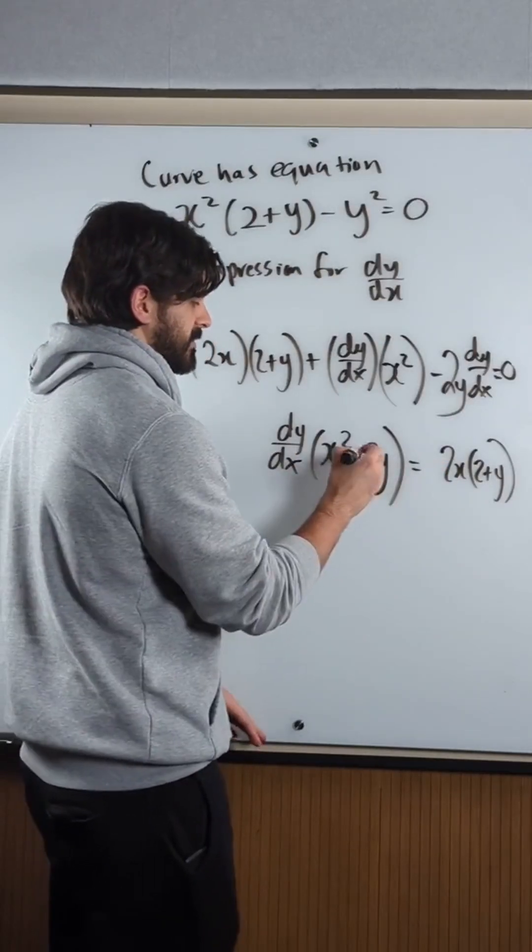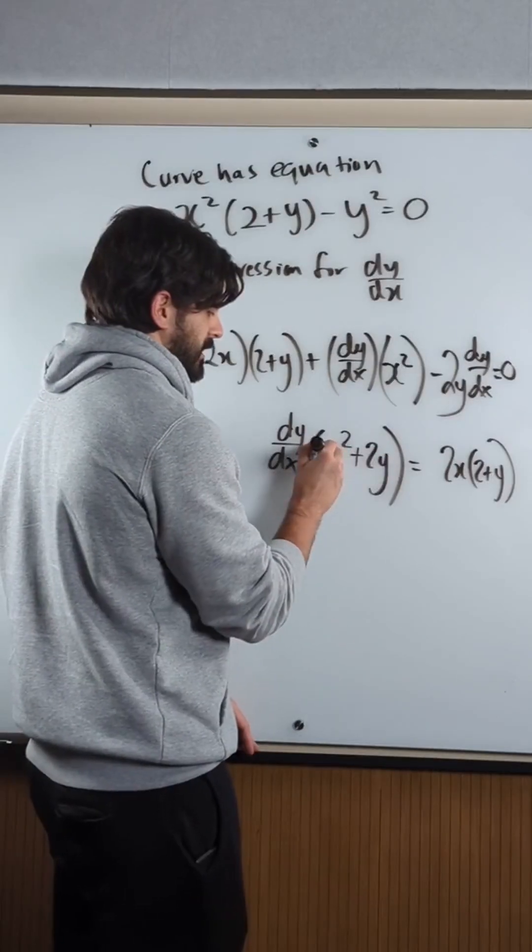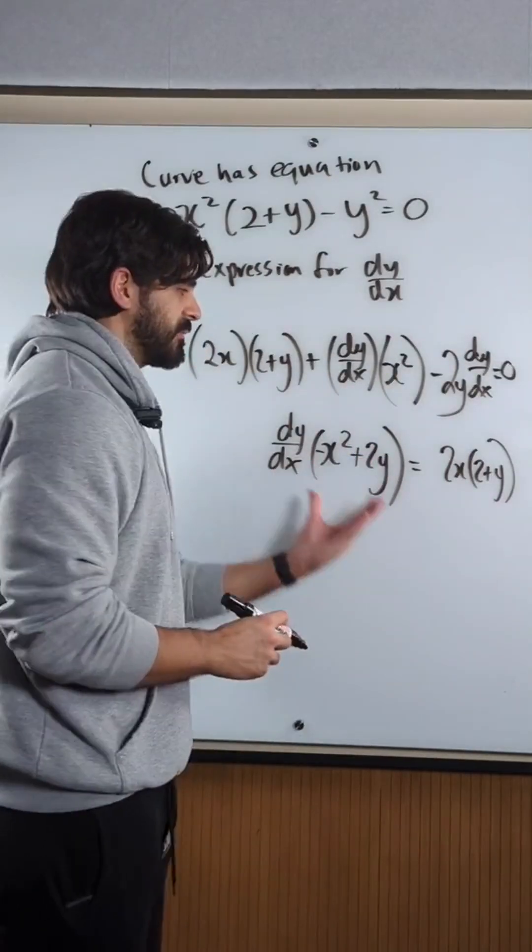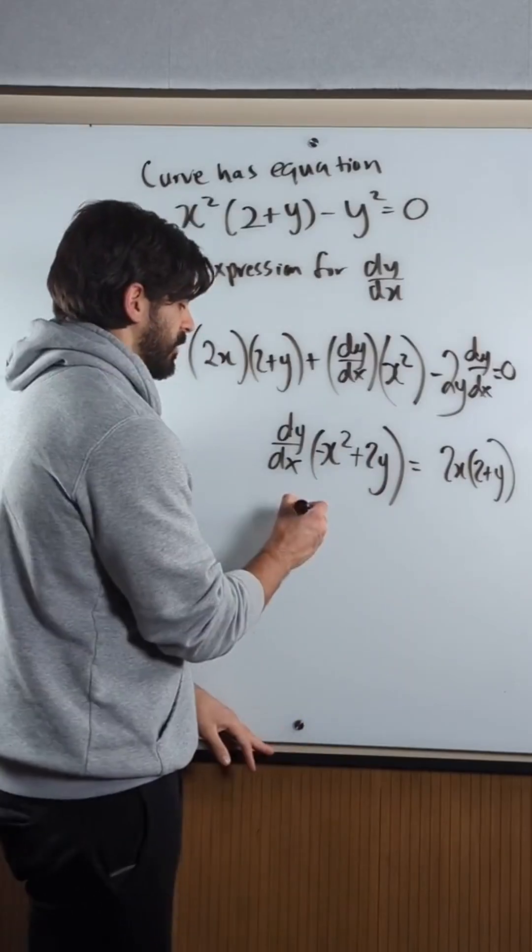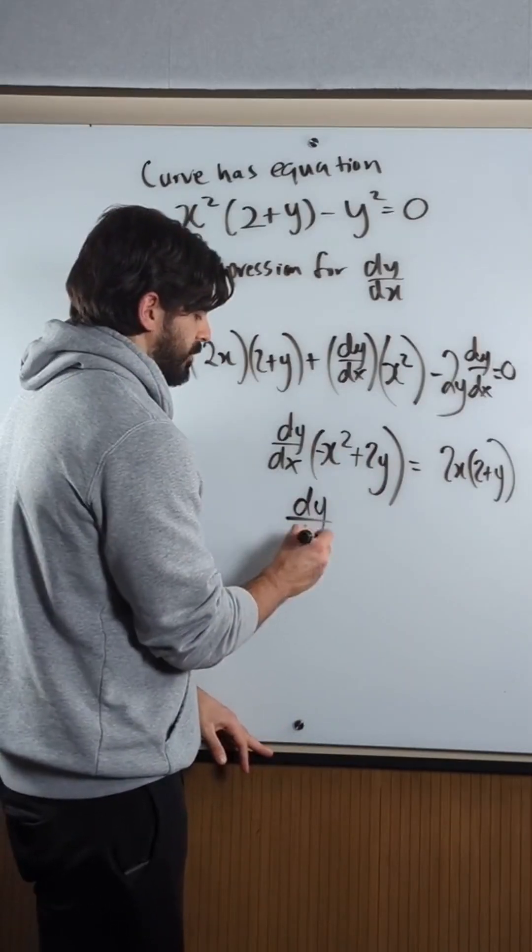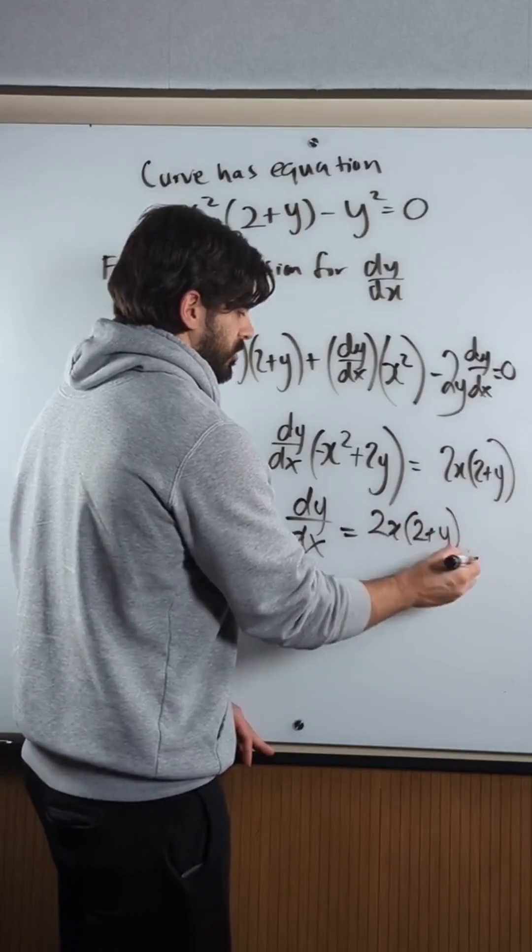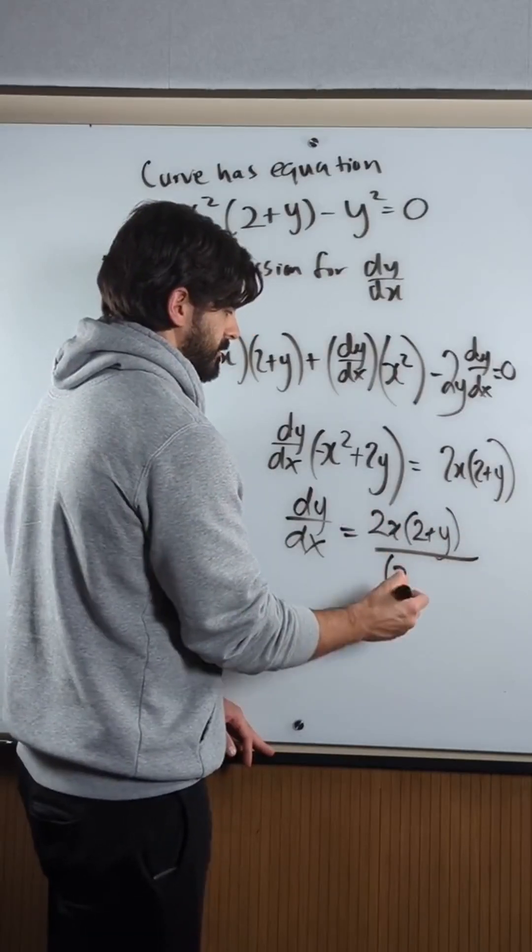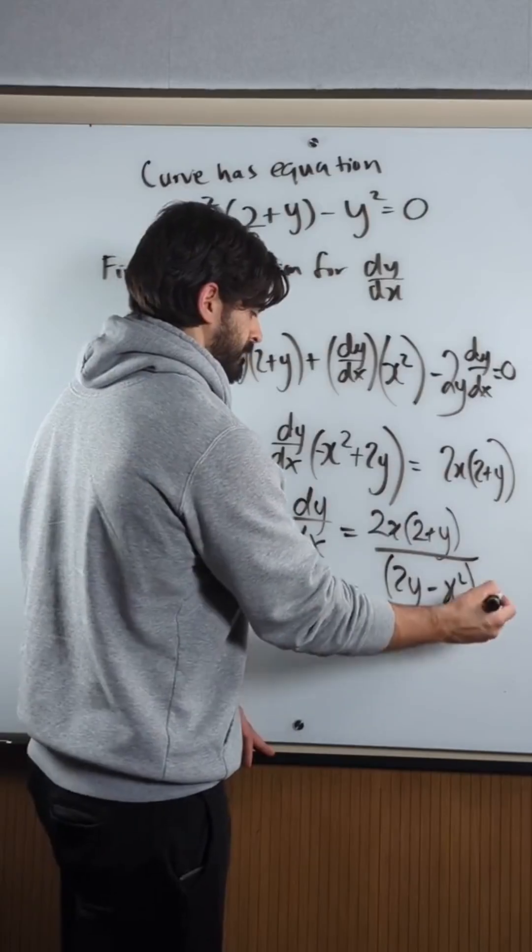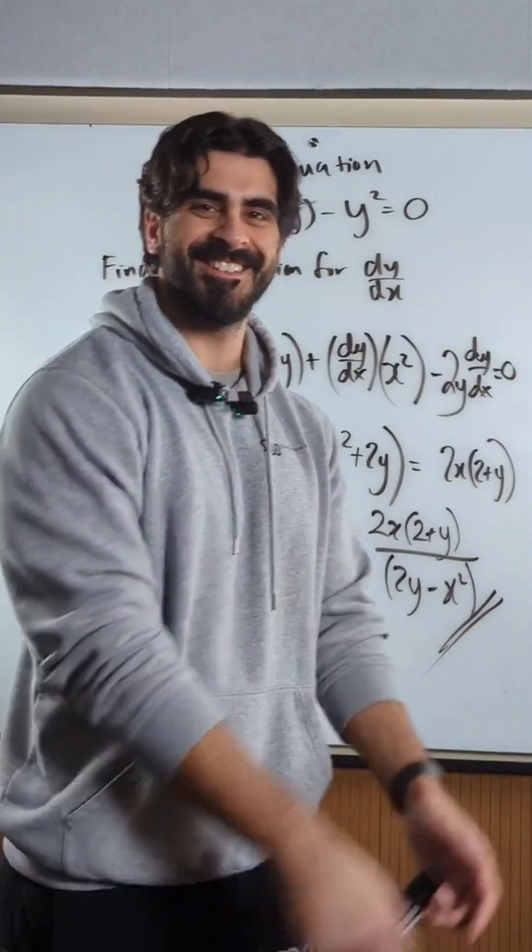which when I expand into this becomes plus minus. Because when I divide by this, I can just write the 2y first. And this is our best answer to secure that dog walking job. Good luck!